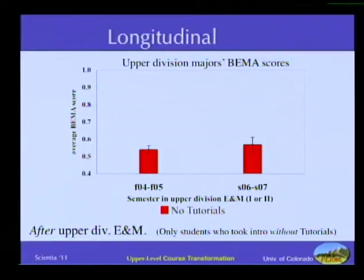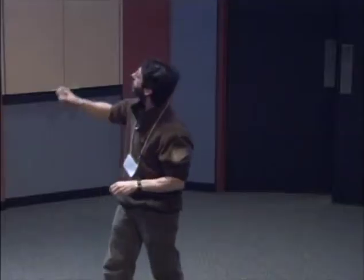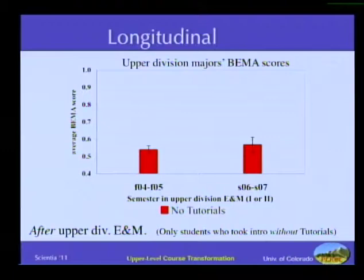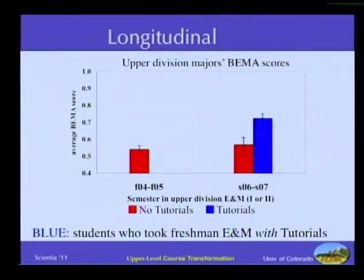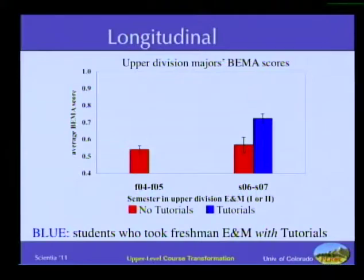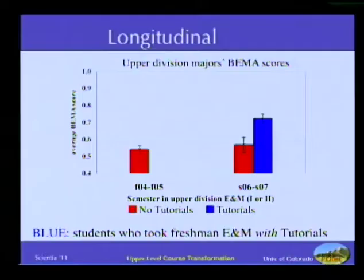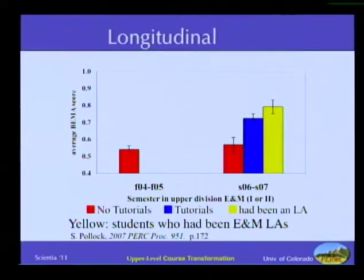Students in red had traditional instruction all the way through — freshman physics and traditional upper division physics. In the second bin, we start to see students who came through our transformed introductory class. The blue students had a different freshman experience, but they're in the same room with the same teacher as the red students in that bin. The teacher doesn't know who had freshman tutorials and who didn't. Yet their performance two years down the pike is dramatically different — a 15 to 20 point difference. It's statistically significant, and I would argue it's pedagogically significant.